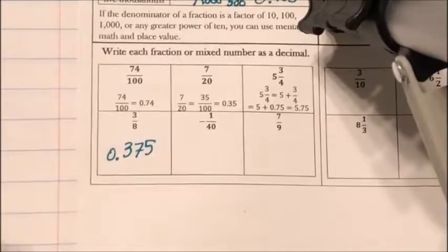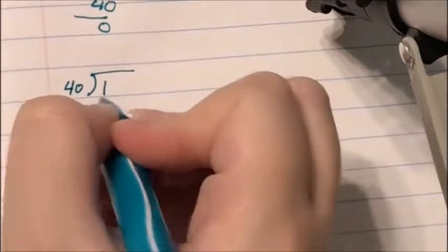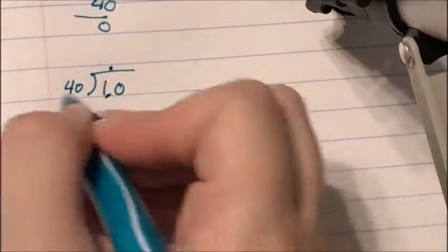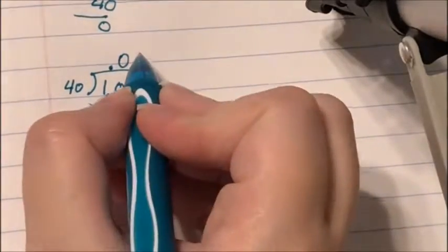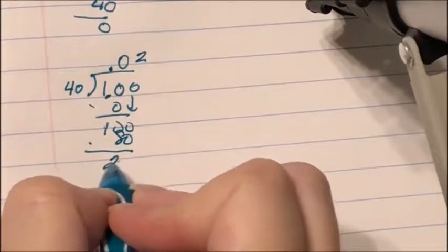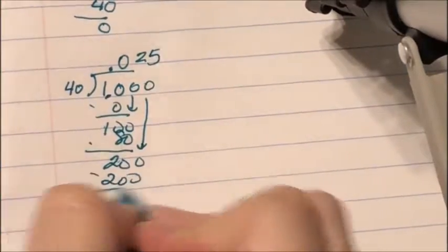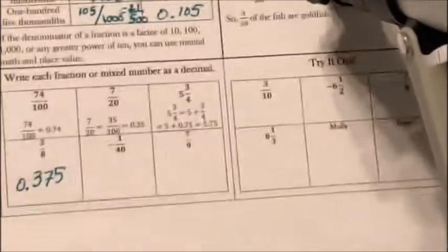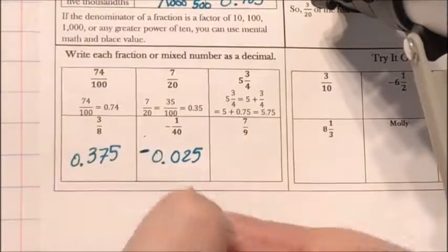The next one is negative 1 fortieth. I'll ignore the negative for now. 40 can't be easily changed to 100, so I divide. 40 cannot go into 10, but 40 can go into 100 — twice, giving 80. Bring down a 0. 40 can go into 200 five times, giving 200 exactly. So the answer is 0.025, and because there's a negative out front, the final answer is negative 0.025.